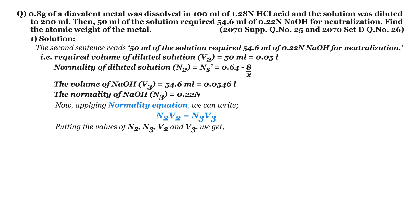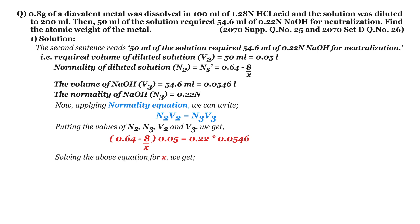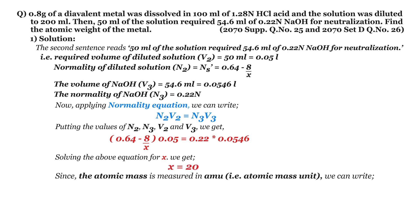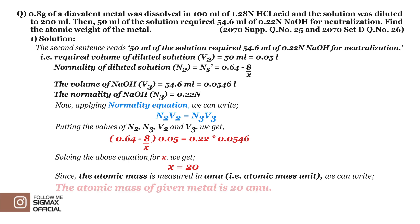Putting the values of N2, N3, V2, and V3 we get: (0.64 − 8/x) × 0.05 = 0.22 × 0.0546. Solving for X we get X equals 20. Since atomic mass is measured in AMU, the atomic mass of the given metal is 20 AMU. In this way we can solve this type of problem.